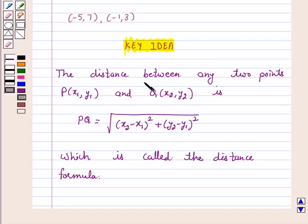We know that the distance between any two points P(x1, y1) and Q(x2, y2) is PQ = √[(x2 - x1)² + (y2 - y1)²], which is called the distance formula. We will take the help of this key idea to solve the above question.